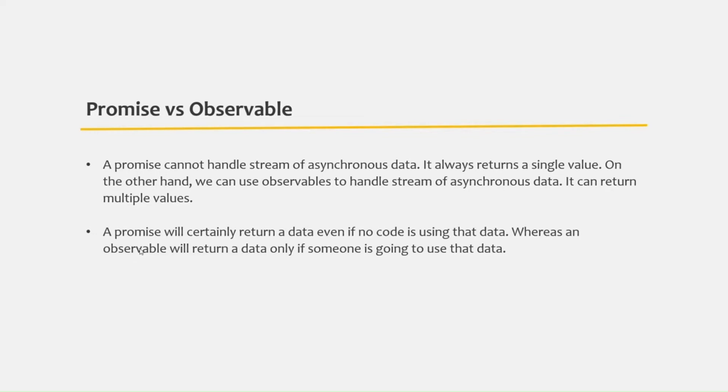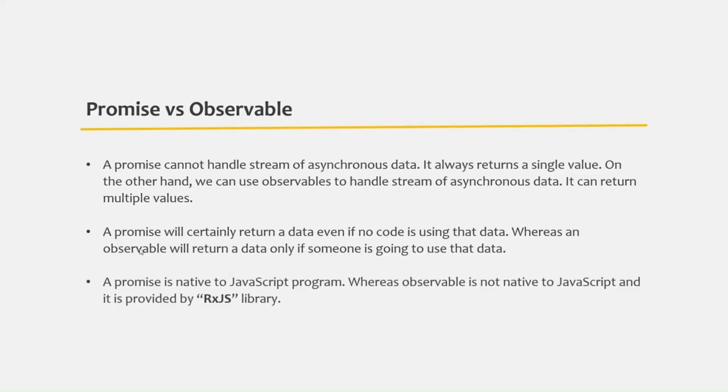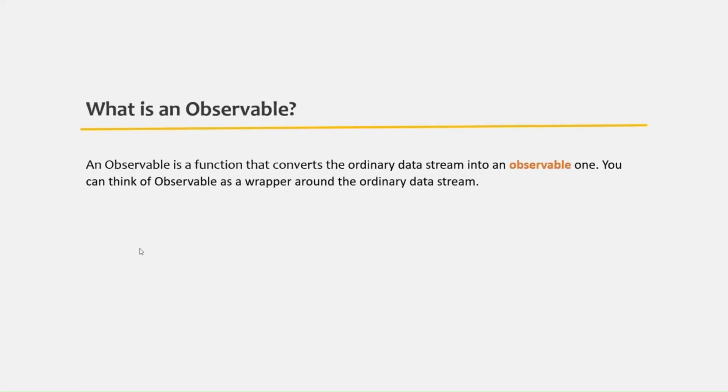A promise is native to JavaScript, provided by the JavaScript language itself. But observable is not a native feature of Angular or JavaScript. It is provided by another JavaScript library called RxJS. We can say that an observable is a function that converts an ordinary data stream into an observable one — you can think of it as a wrapper around an ordinary data stream.